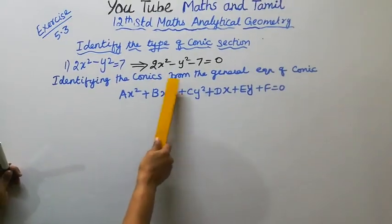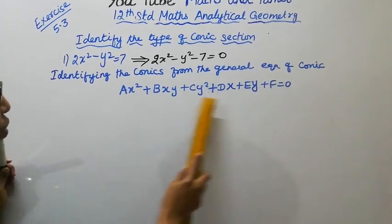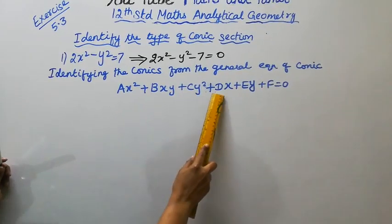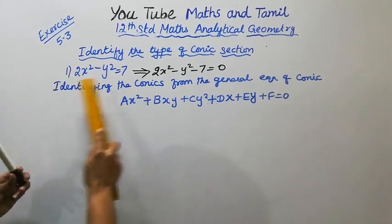Identify the conics from the general equation of conic. General equation of conic is Ax² + Bxy + Cy² + Dx + Ey + F = 0.